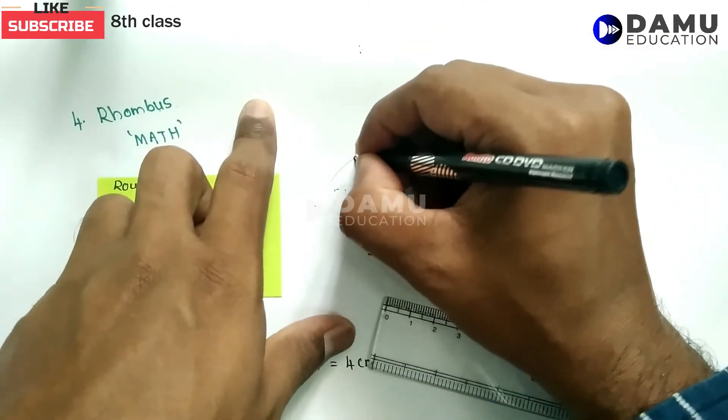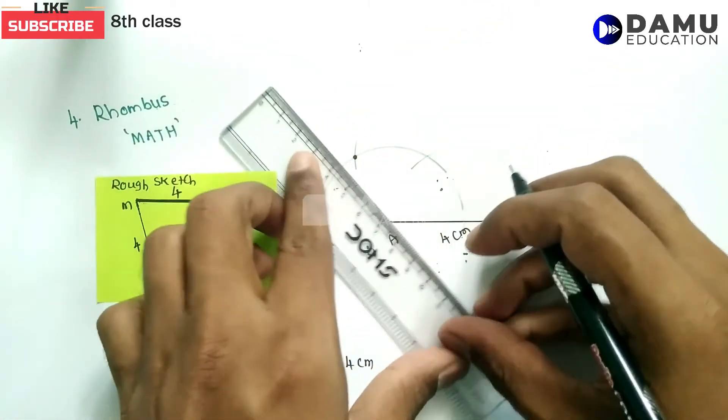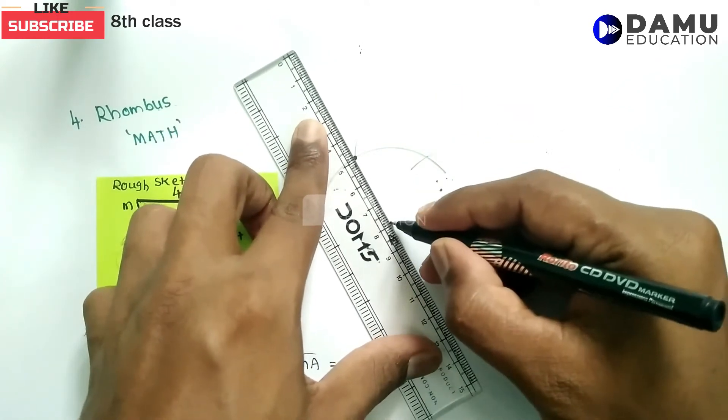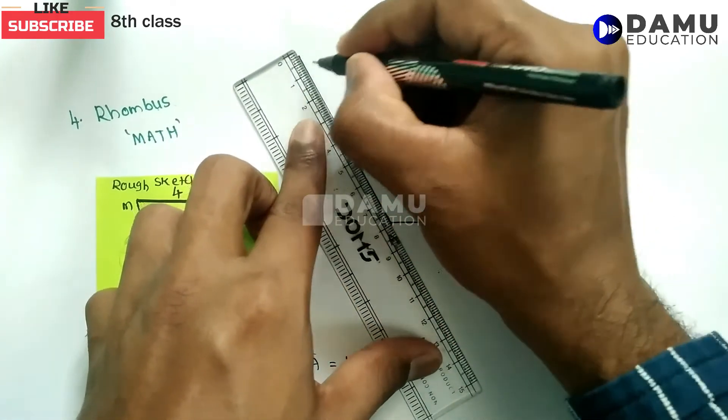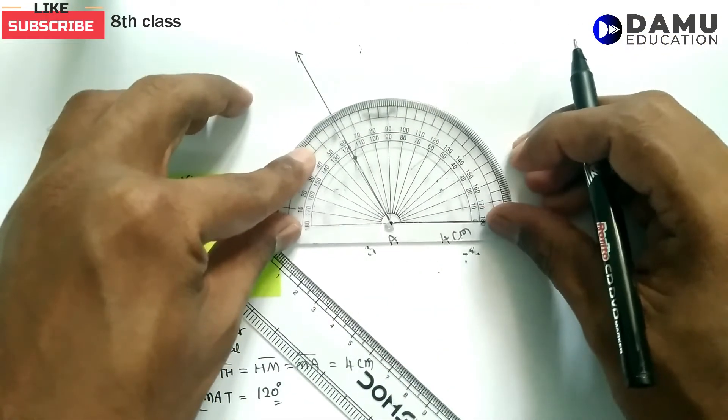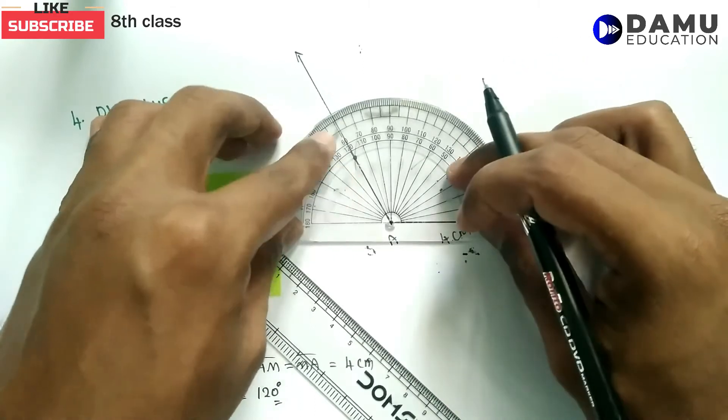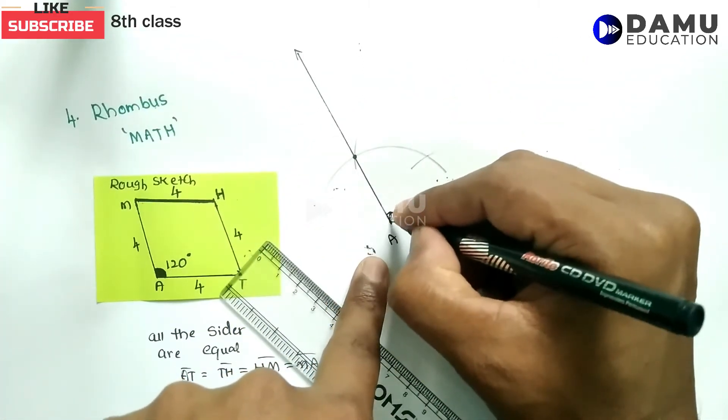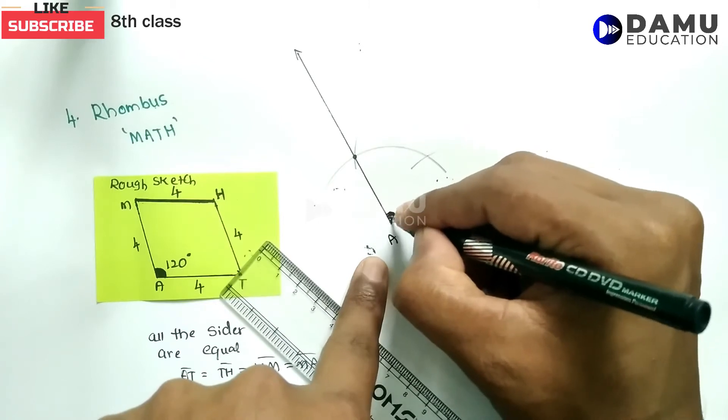Draw one ray from A - this is the 120-degree angle. If you take a protractor and measure it, we will get exactly 120 degrees. We have constructed the 120-degree angle.